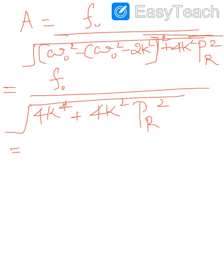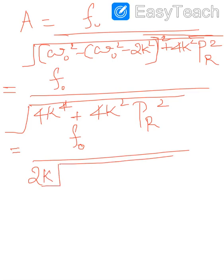In the numerator we have f₀. Taking 4k² outside the square root gives 2k, so the maximum amplitude becomes: a_max = f₀ / [2k · √(k² + pᵣ²)], where the driving frequency equals pᵣ = √(ω₀² − 2k²).